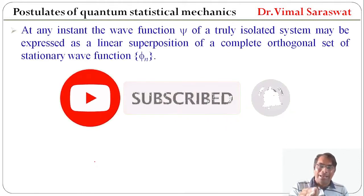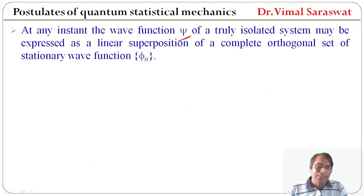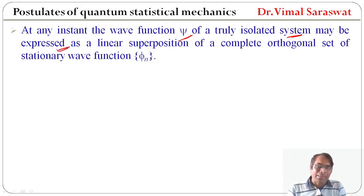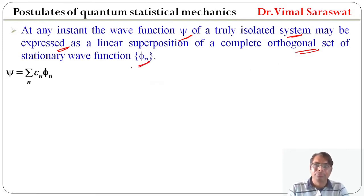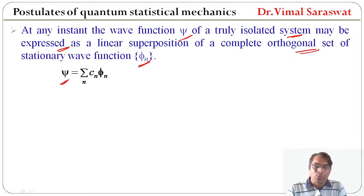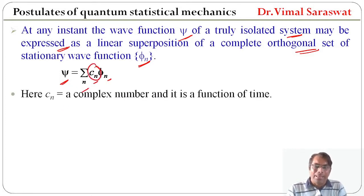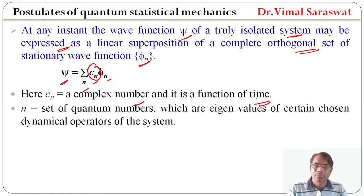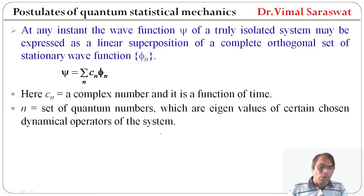At any instant, the wave function ψ of a truly isolated system may be expressed as a linear superposition of a complete orthogonal set of stationary wave functions φ_n. So, ψ = Σ_n c_n φ_n. Here, c_n is a complex number and it is a function of time. And n is the set of quantum numbers which are eigenvalues of certain chosen dynamical operators of the system.